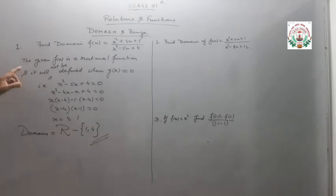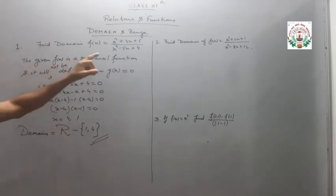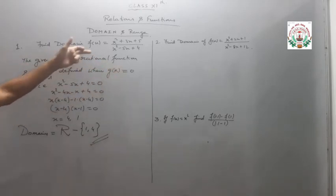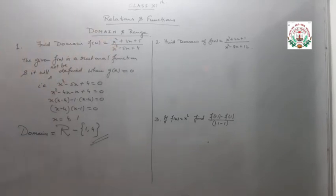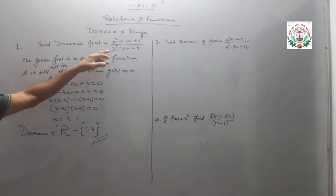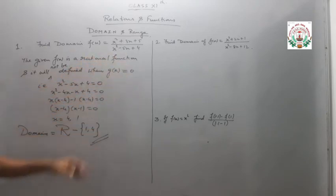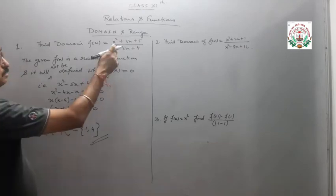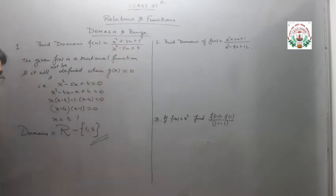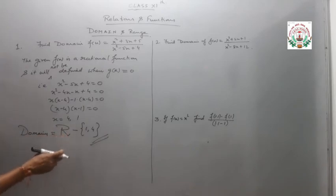The given function is a rational function since the numerator and denominator are both polynomial functions. It will not be defined when the denominator equals 0. Under these circumstances, the denominator becomes 0, so the domain is the set of all real numbers excluding 1 and 4.